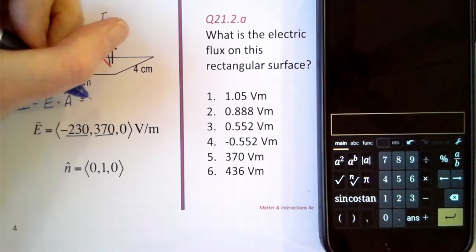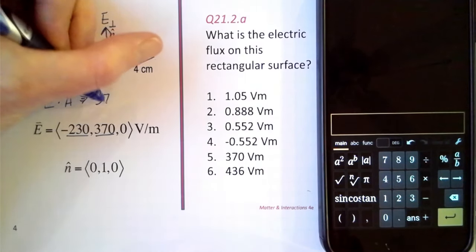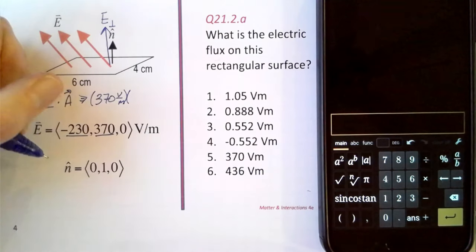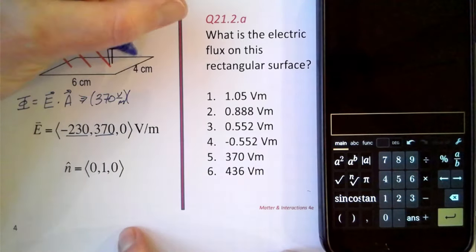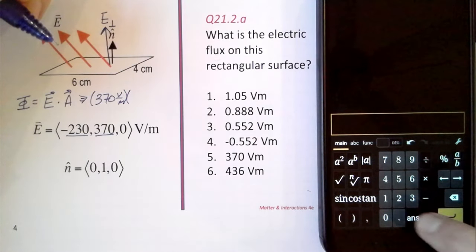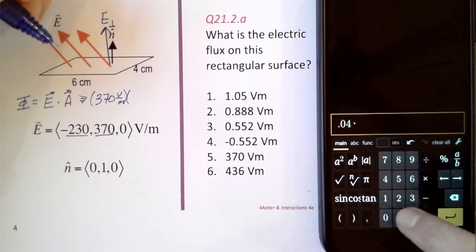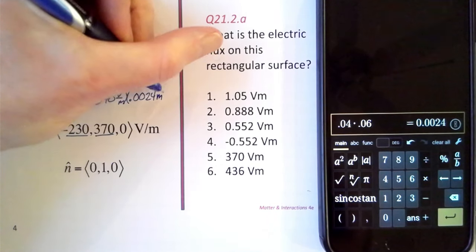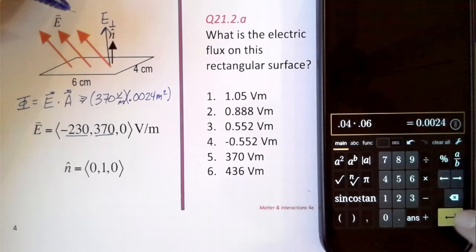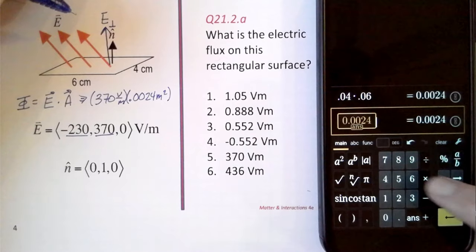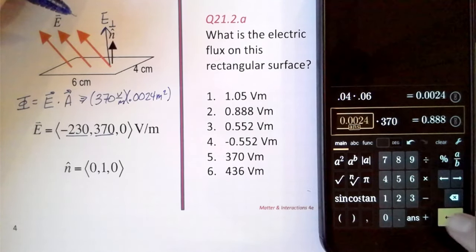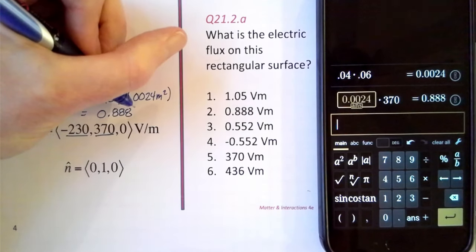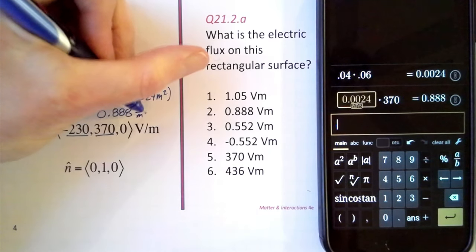So that is going to give us 370 volts per meter times the area of this rectangle, which is 0.04 times 0.06. So 0.0024 square meters and then that number times 370 volts per meter gives us 0.888 volts per meter times a meter squared.